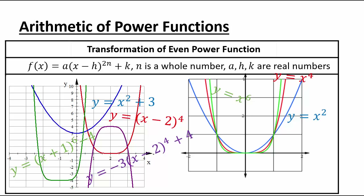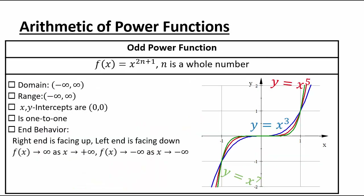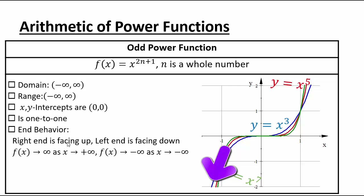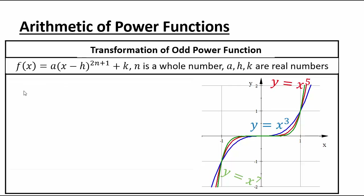Similarly, if you have odd power functions — x to the 3rd, 5th, or 7th power — the domain is negative infinity to infinity, range is negative infinity to infinity, x and y intercepts are (0,0), the function is one-to-one. As x goes to infinity, the function goes to infinity; as x goes to negative infinity, the function goes to negative infinity. So the right end faces up and the left end faces down. Transformations of odd functions look like a times x minus h to the power 2n plus 1, plus k, where a controls vertical stretch or compression.